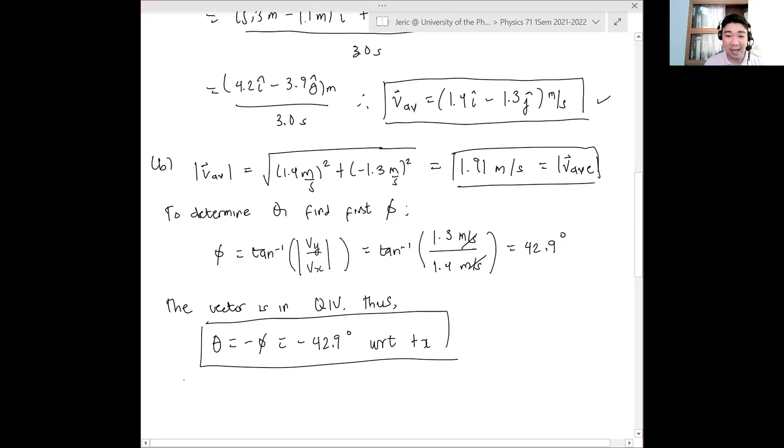Of course, you can also say that the average velocity is just 1.91 meters per second, 42.9 degrees south of east. That's also acceptable.